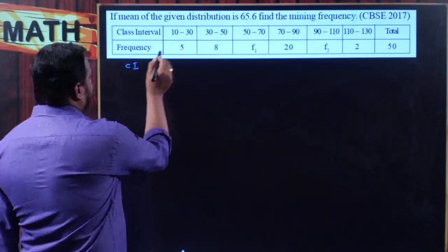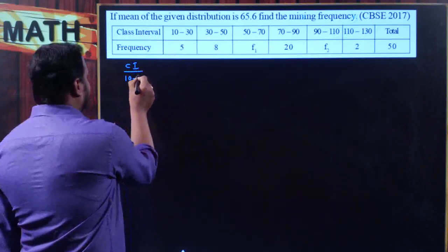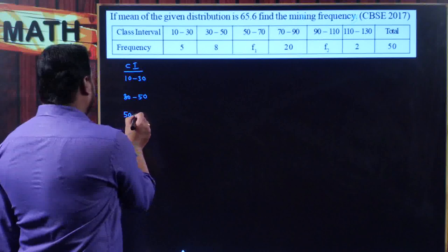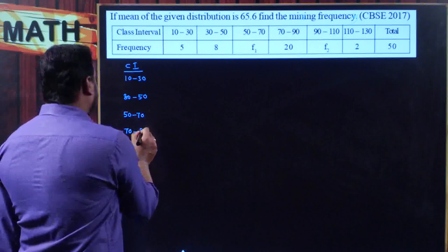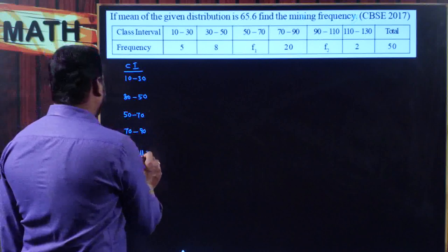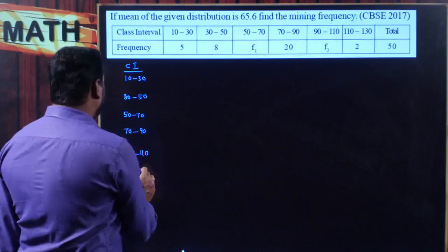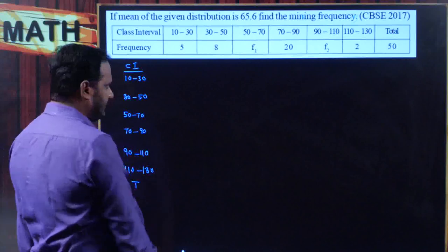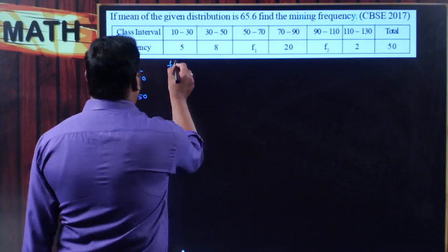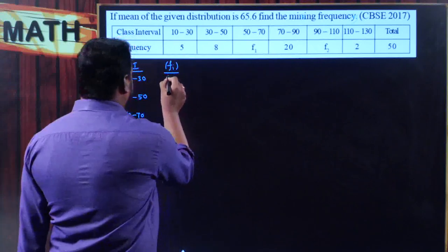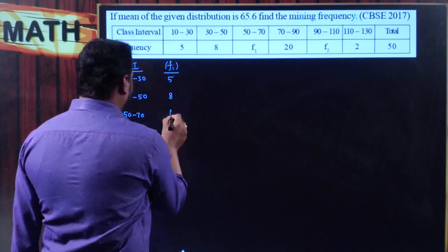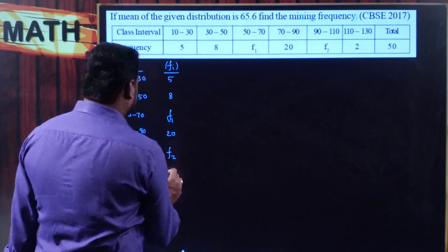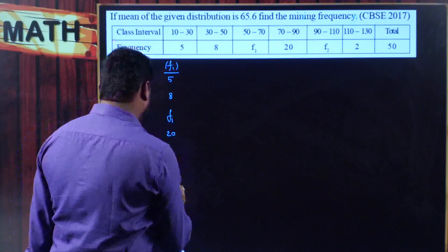The class intervals are 10–30, 30–50, 50–70, 70–90, 90–110, 110–130, and the total is given. Corresponding frequencies are 5, 8, f1, 20, f2, 2, and the total is 50.